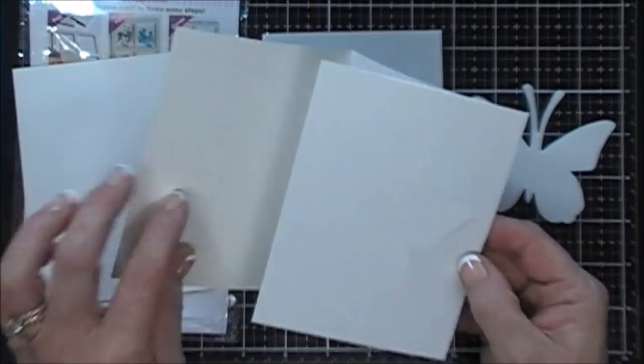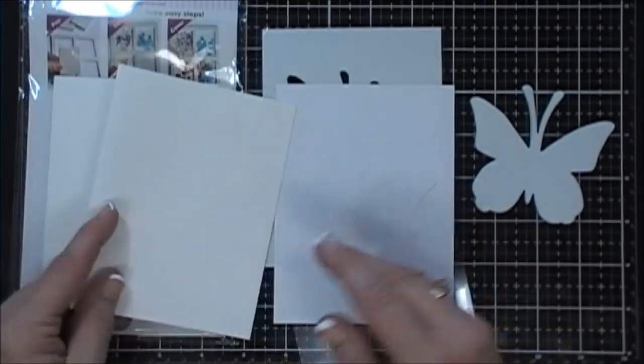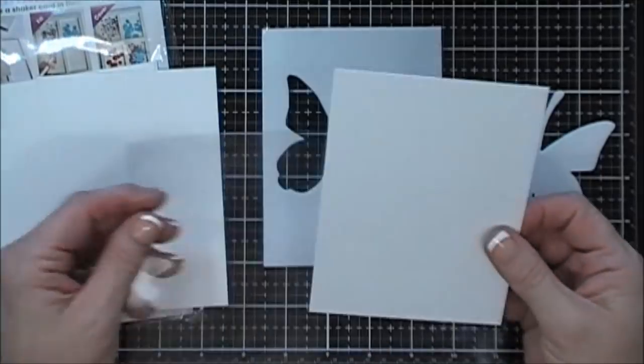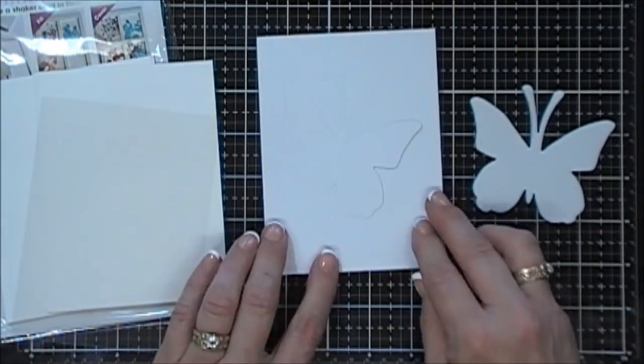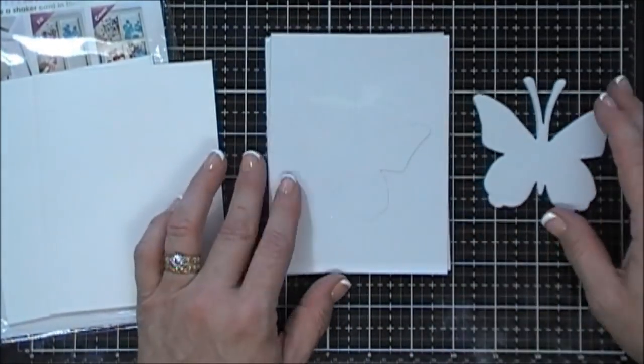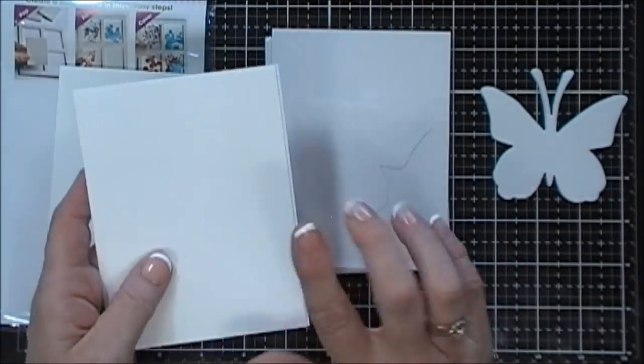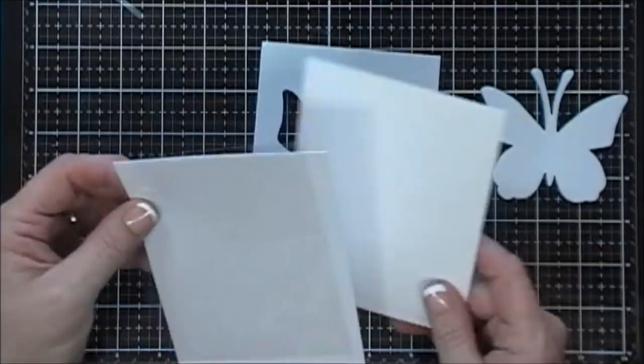It comes with two card bases, four and a quarter by five and a half inches, and then it has your card front with the die cut butterfly. It also comes with two acetate sheets, so two complete sets, two four-piece sets. We're just going to use one set today and save the other one for another card.